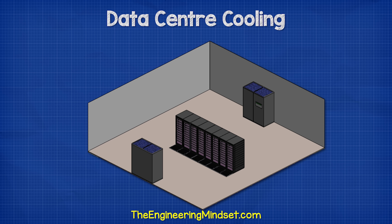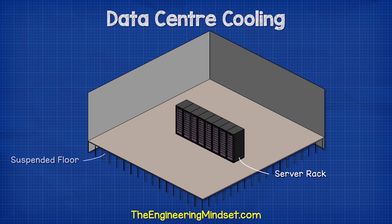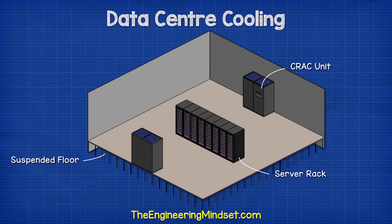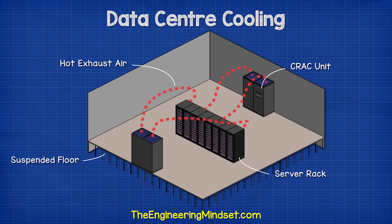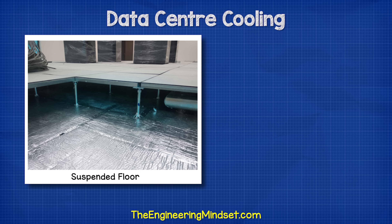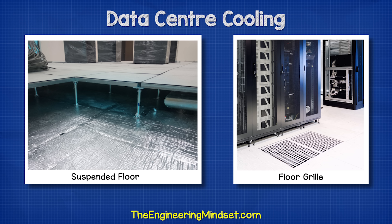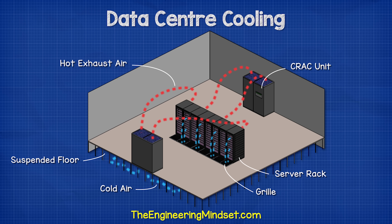If we look at a typical, simple data center, we find the server racks within the room and these are typically installed on a suspended floor. Around the perimeter of the room we find CRAC units, which stands for computer room air conditioners. These CRAC units suck in the hot exhaust air from the servers into the top, then cool this air down and push it into the void under the floor. The floor tiles are made from thick, solid materials which contain the air within the void. Some floor tiles have grills built into them, strategically placed near the servers so that the cold air can exit the void and be sucked directly into the servers.